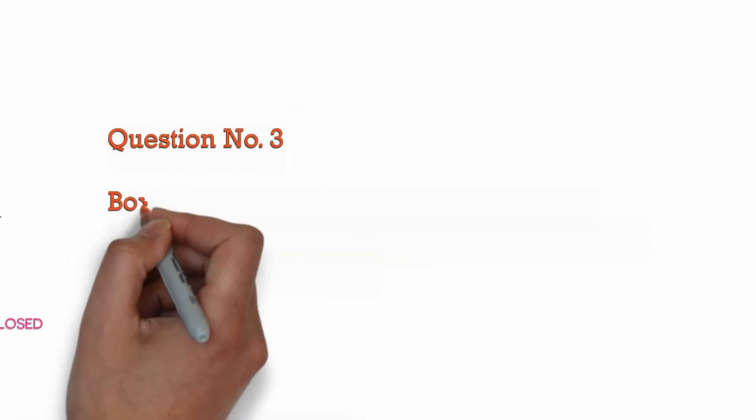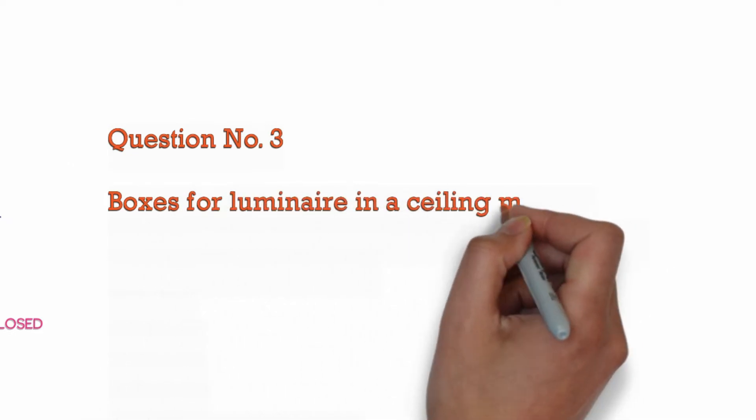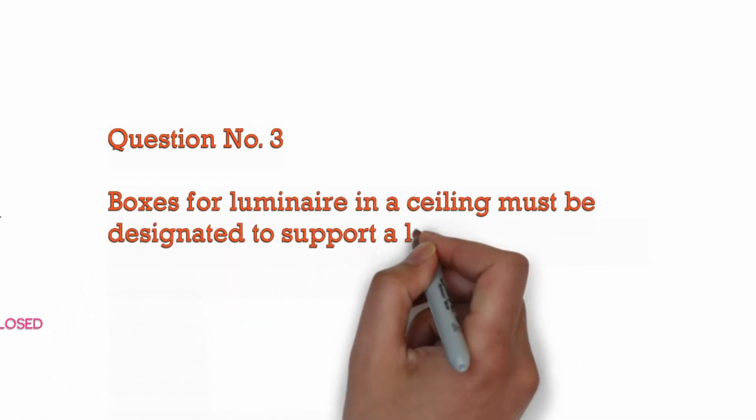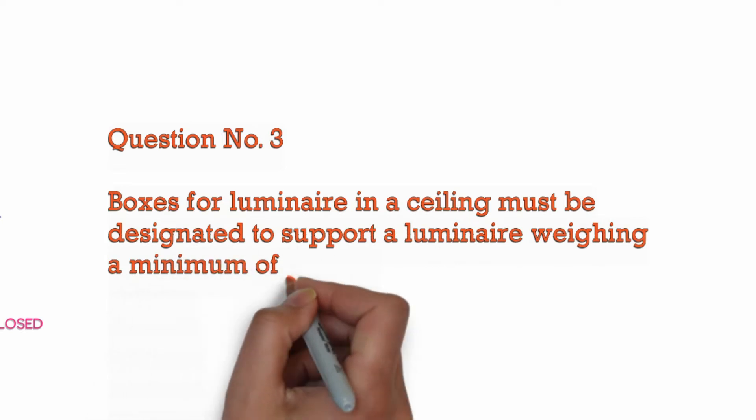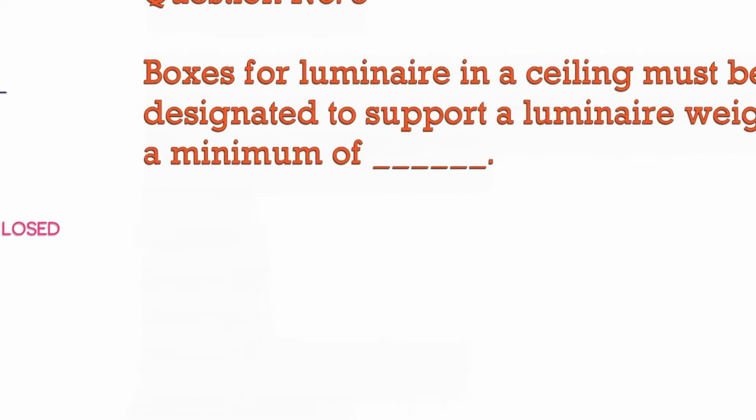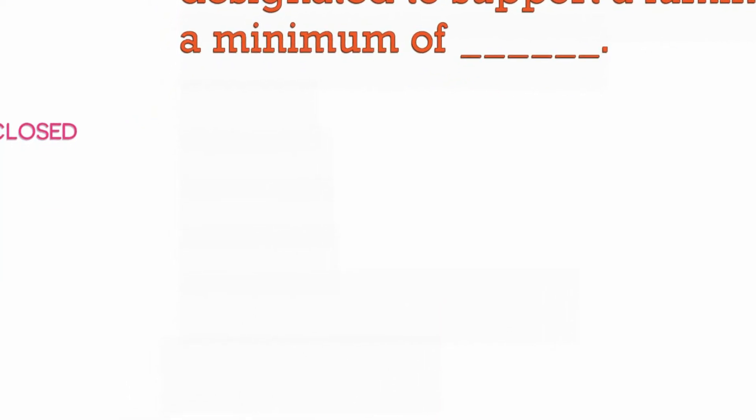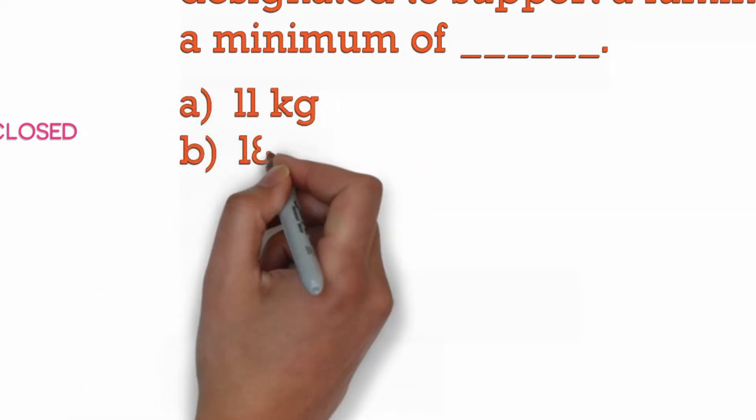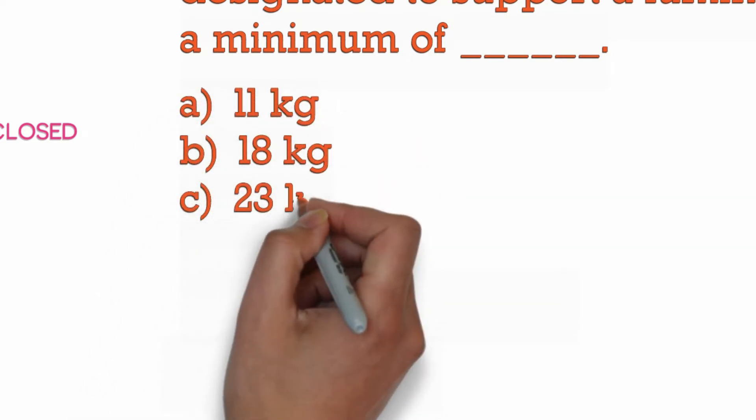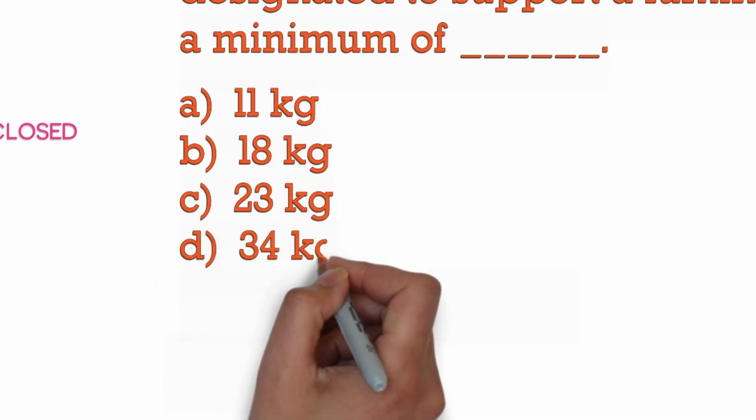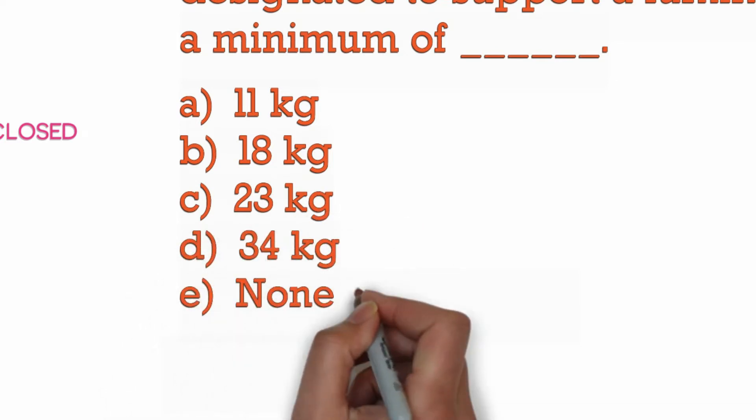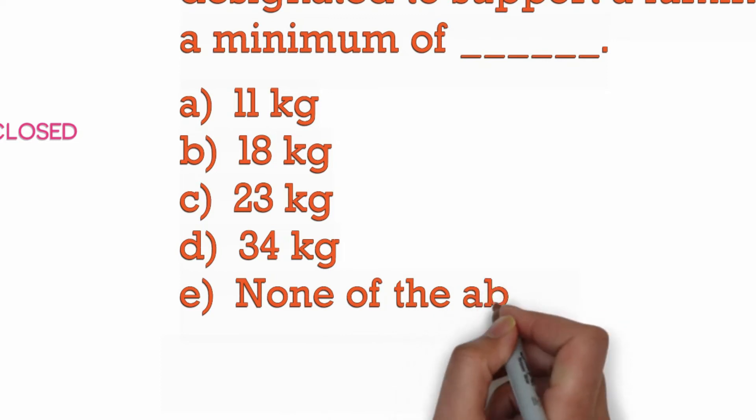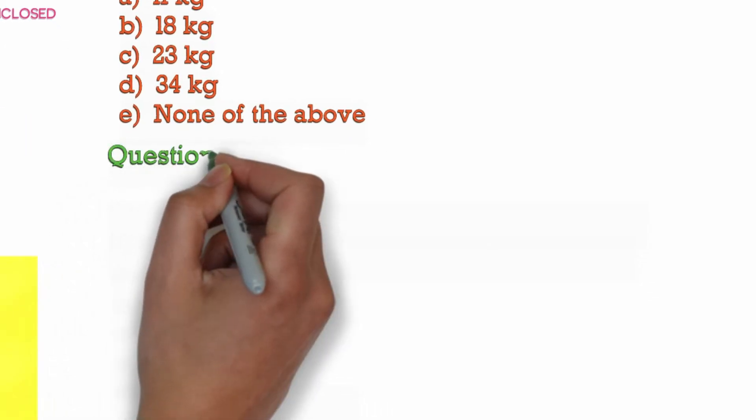Question Number 3: Boxes for luminaire in a ceiling must be designated to support a luminaire weighing a minimum of blank. A. 11 kilogram, B. 18 kilogram, C. 23 kilogram, D. 34 kilogram, E. None of the above.